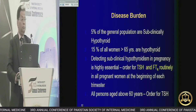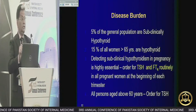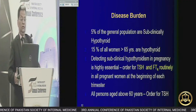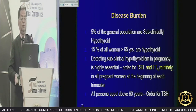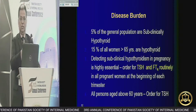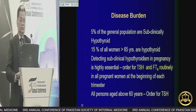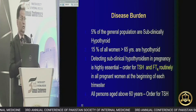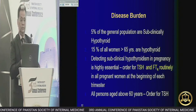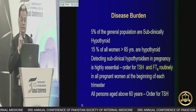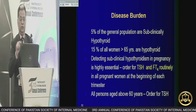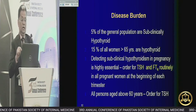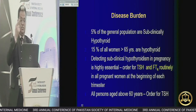Regarding disease burden: 5% of the general population is subclinically hypothyroid, and 15% of all women above the age of 65 are hypothyroid. Detecting subclinical hypothyroidism in pregnancy is highly essential. We have to order TSH and free T4 routinely at the beginning of each trimester, and all persons above age 60 should have a TSH test.